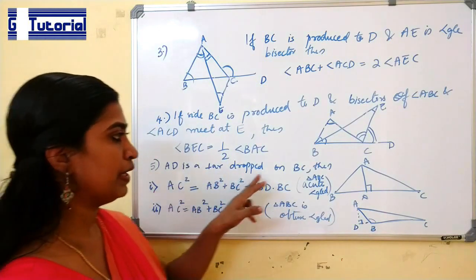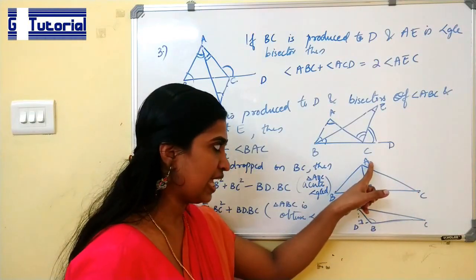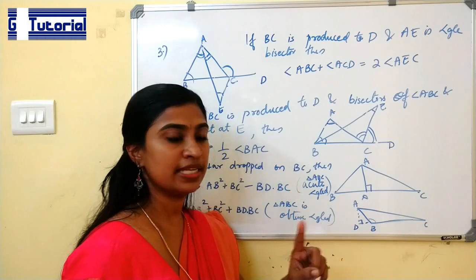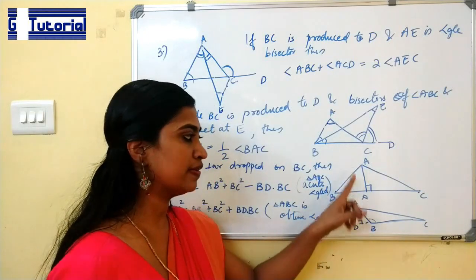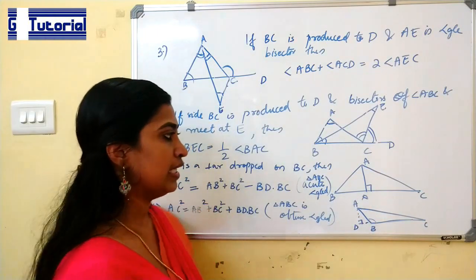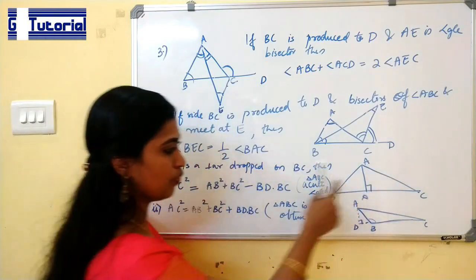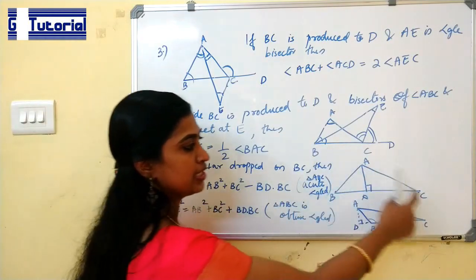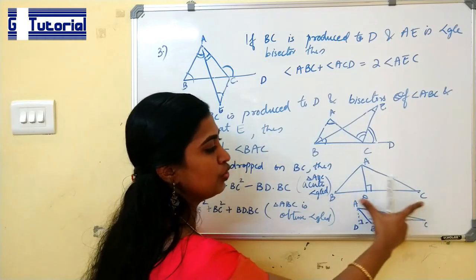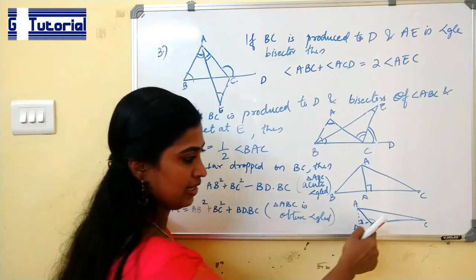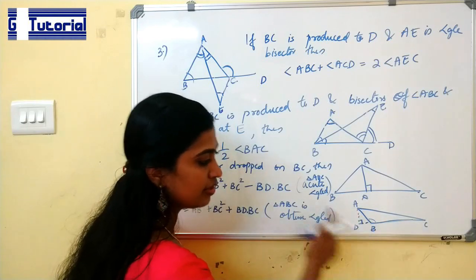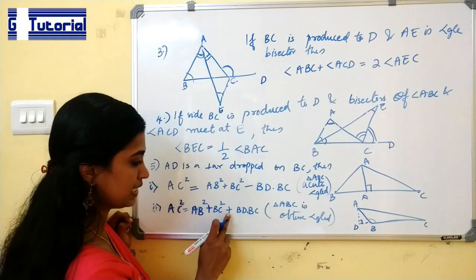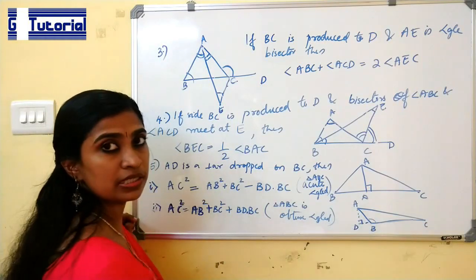Next theorem: if side BC is produced to D, and the bisectors of angle ABC and angle ACD meet at point E, then angle BEC equals half of angle BAC. Finally, if AD is a perpendicular dropped from vertex A to side BC, two cases arise. In case of an acute angle triangle: AC² = AB² + BC² − 2 × BD × BC. In case of an obtuse angle triangle, where BC is extended before the perpendicular is drawn: AC² = AB² + BC² + 2 × BD × BC.